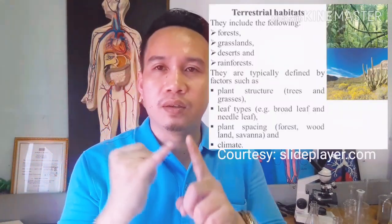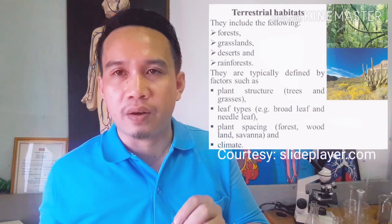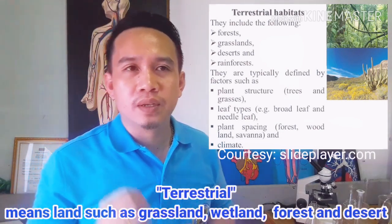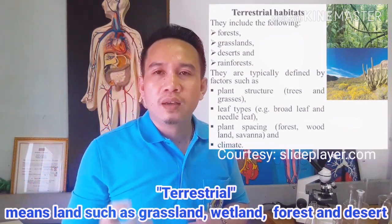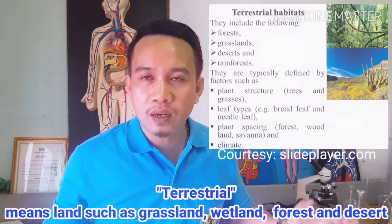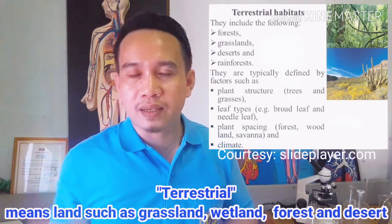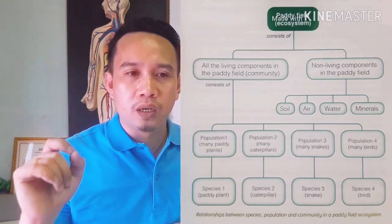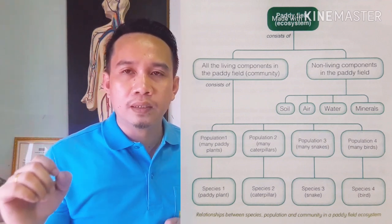In a forest ecosystem, different kinds of animals live there, including endangered species and wildlife. In wetland and grassland ecosystems, humans typically live in terrestrial ecosystems, while grasslands are home to herbivores and other animals. Now let's look at the relationships between species, population, and community in a paddy field ecosystem.